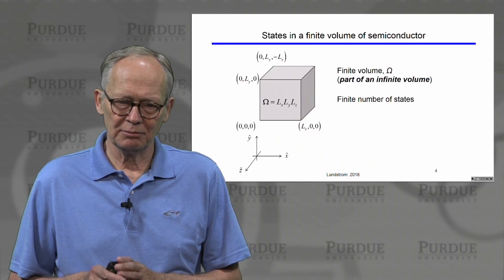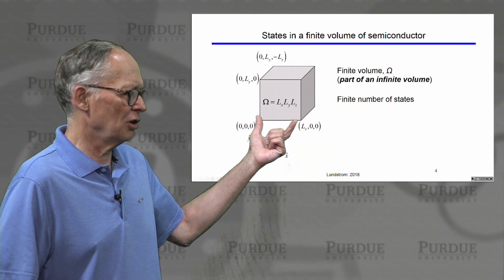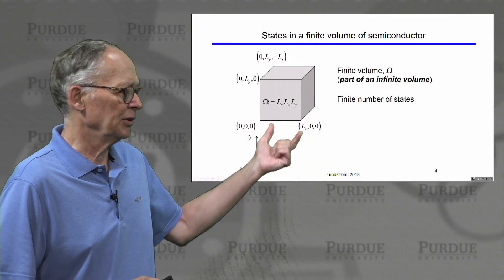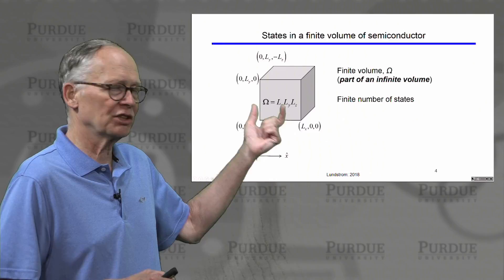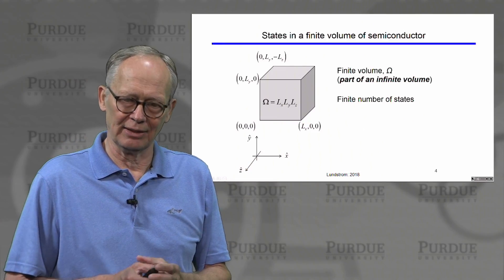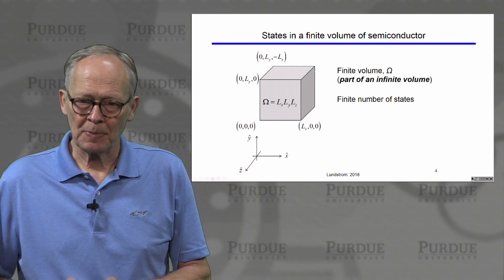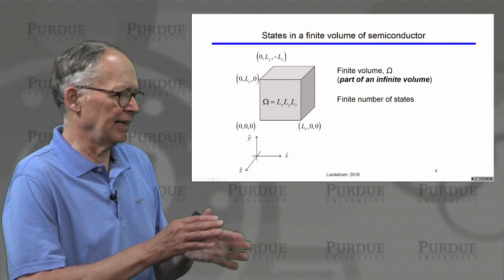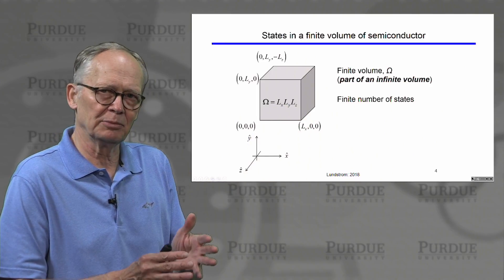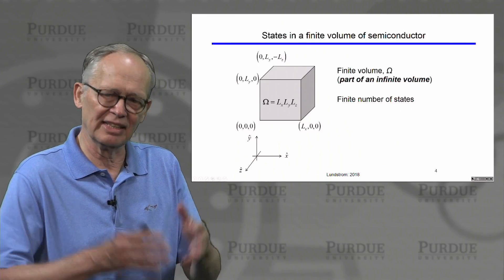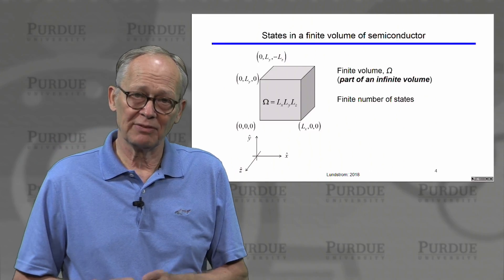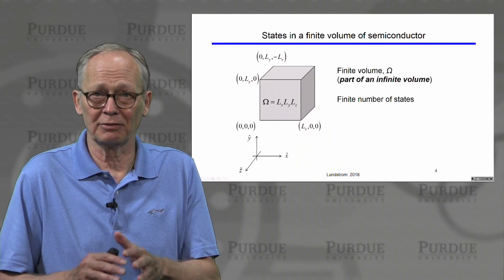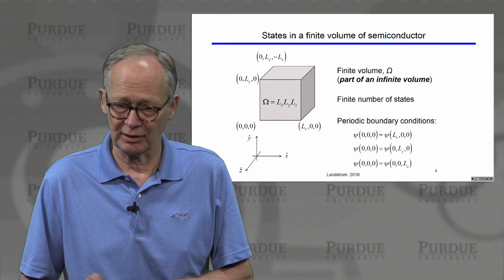Let's begin by thinking about a large chunk of semiconductor crystal with a volume omega, with length Lx in the x direction, Ly in the y direction, Lz in the z direction. Think of this as a large but finite volume carved out of an infinite bulk volume. There will be a finite number of states because the states come from atoms, and there are a finite number of atoms in this volume.